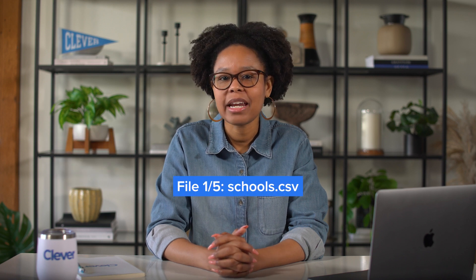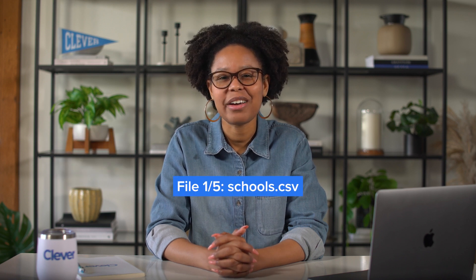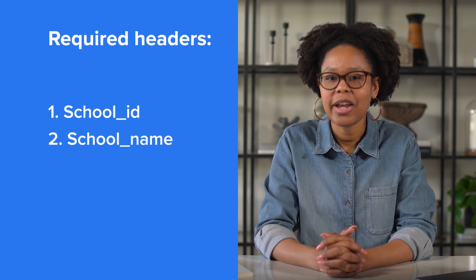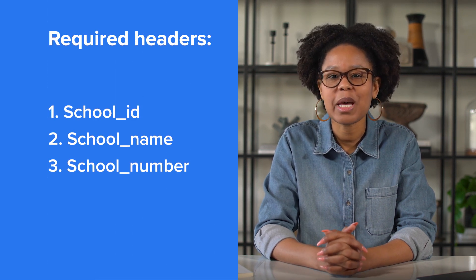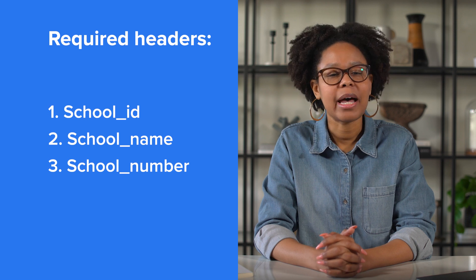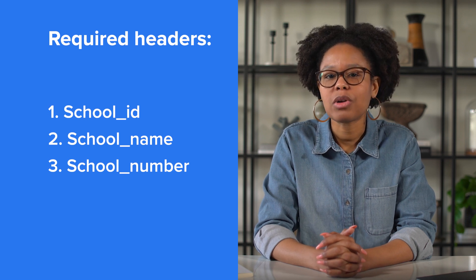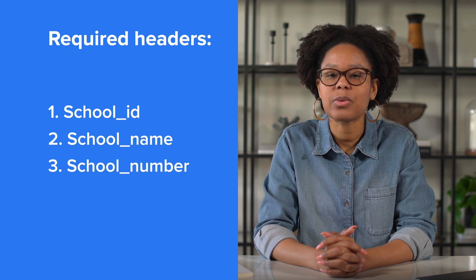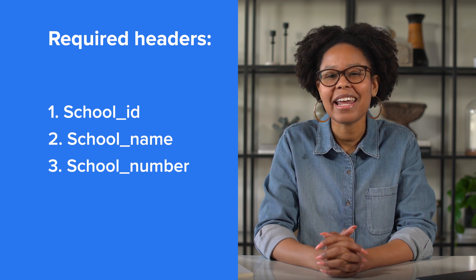Now, let's start by editing your schools.csv file. This file has three required headers, or columns, to be uploaded. Keep in mind, you might have some additional required headers depending on the apps you plan to connect with Clever, and you can always add headers as needed.